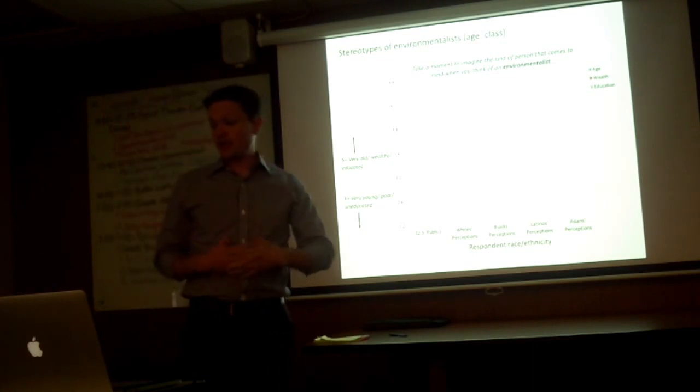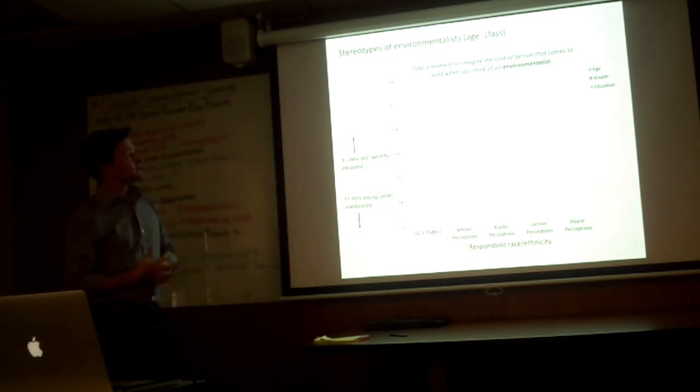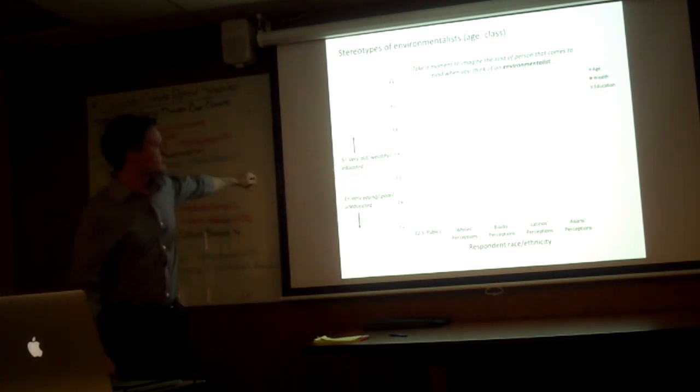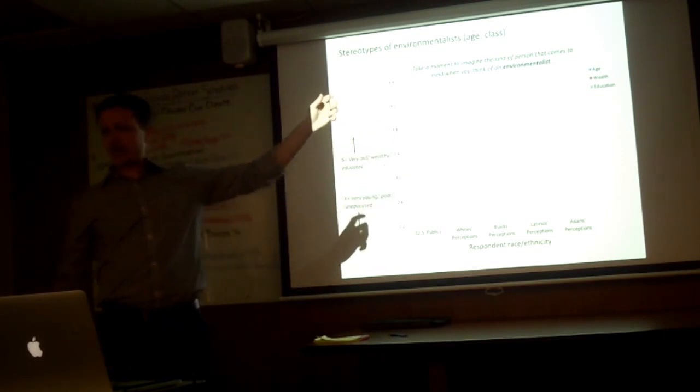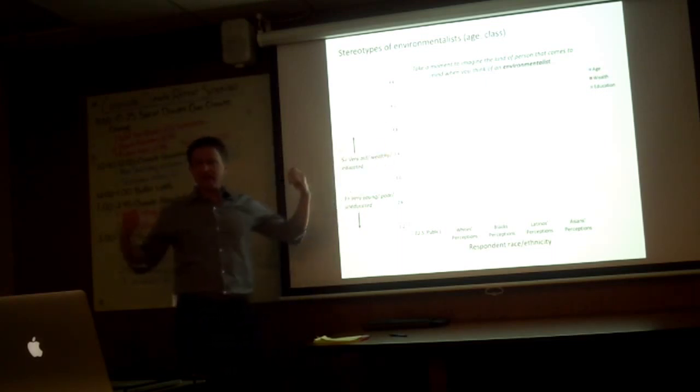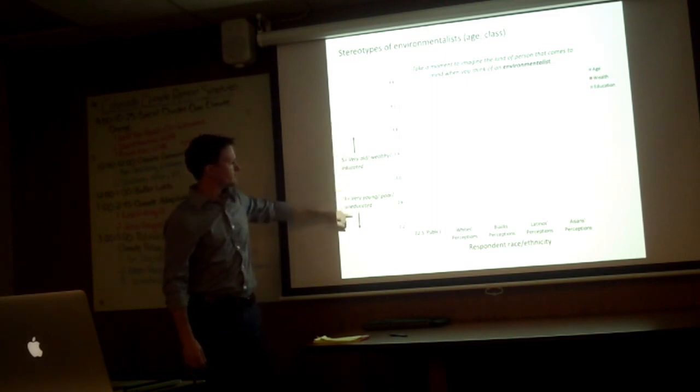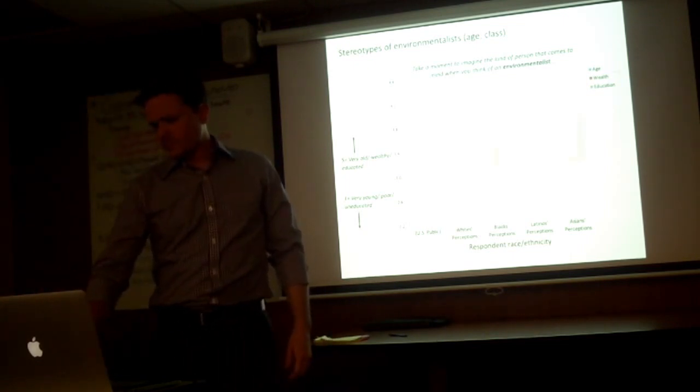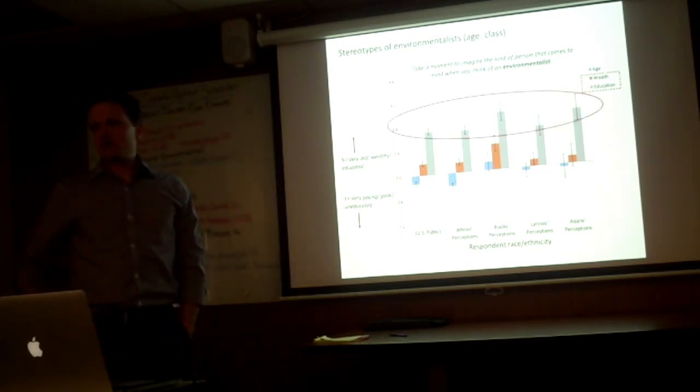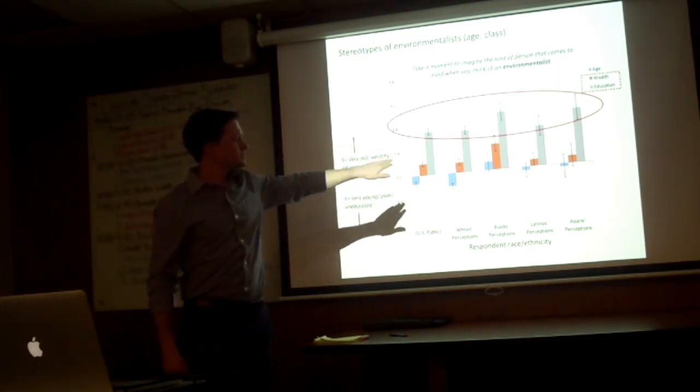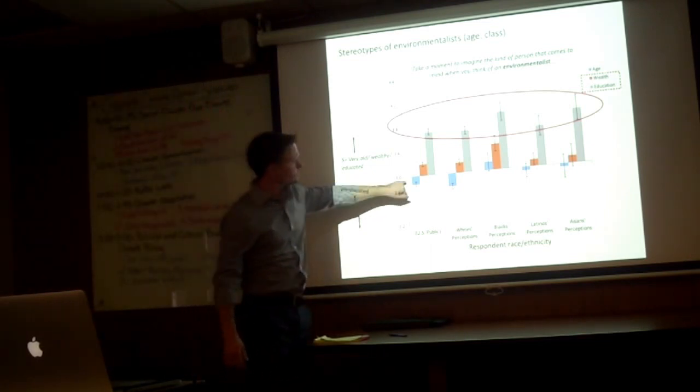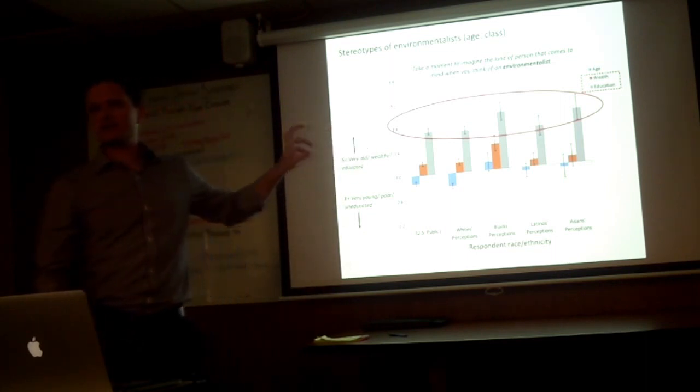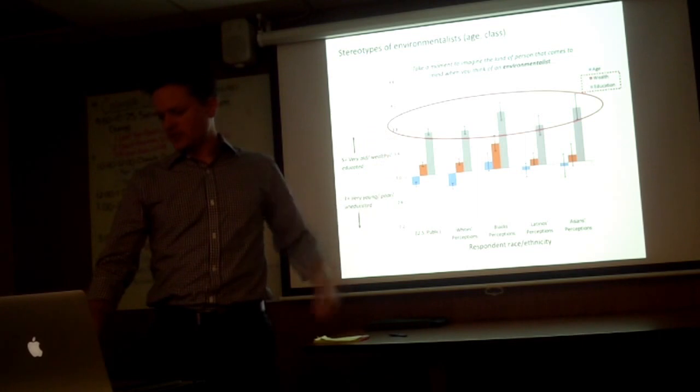We also looked at class associations and in particular found consensus in class associations with the term environmentalists. So here, these are different measures but put on the same scale here. What they're doing is rating the extent to which they associate, so this is for class, so wealth and education, and also the social category age. Who comes to mind, indicating who comes to mind when they think of an environmentalist? So higher scores being older, so very old, to lower scores being very young. So this is relative scales, and wealthy, and educated. And we have across racial and ethnic groups. So generally, we see a sort of strong stereotype consensus in the area of class, social class, not so much in terms of age. So people seem to be imagining a youngish person who's moderately wealthy and well-educated. So that seems to be quite consistent in particular. So the class stereotypes seem to be driven by education, which I don't think is something that's talked about much, at least not in psychological literature.